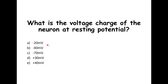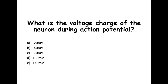What is the voltage charge of the neuron at resting potential — minus 20, minus 40, minus 70, positive 30, or positive 40 millivolts? If you selected minus 70 millivolts, you are correct. What is the voltage charge during an action potential? If you selected positive 40 millivolts, you are correct.